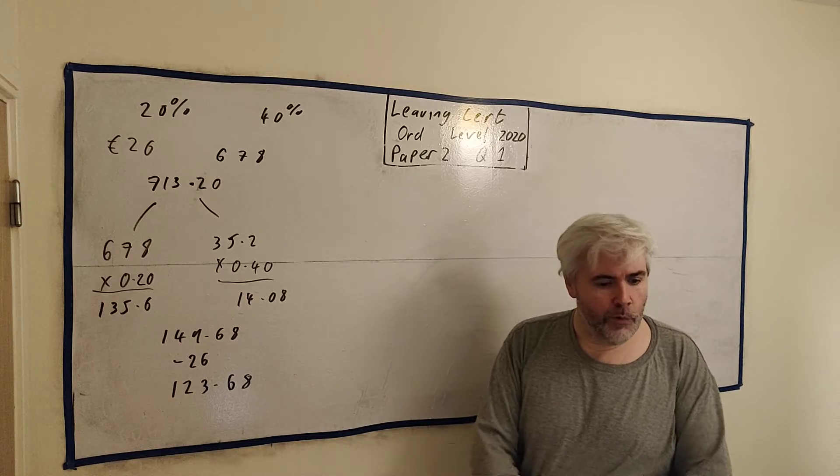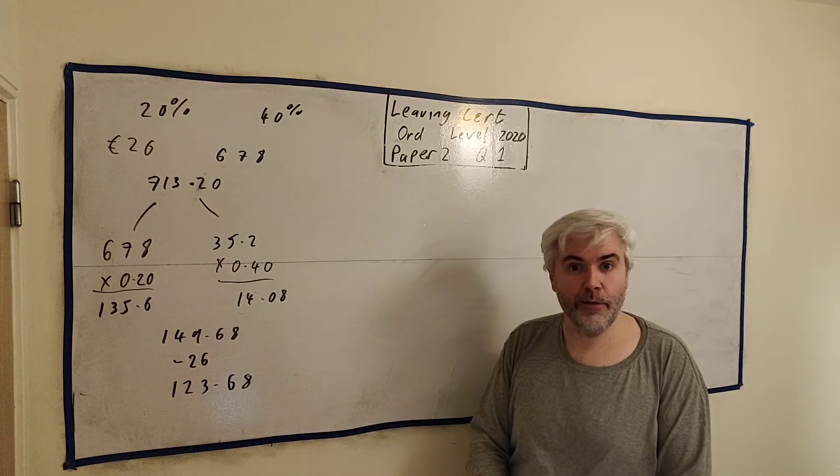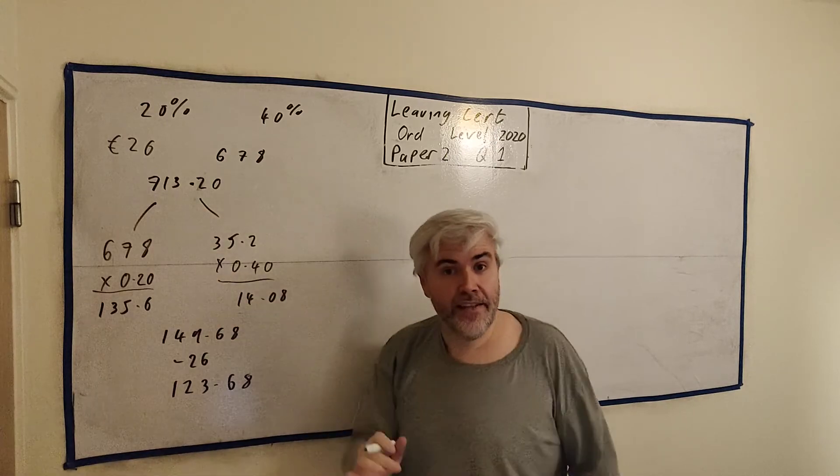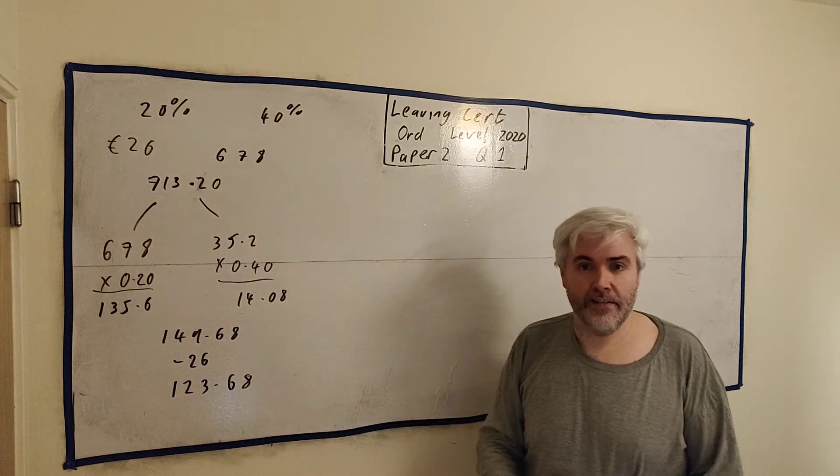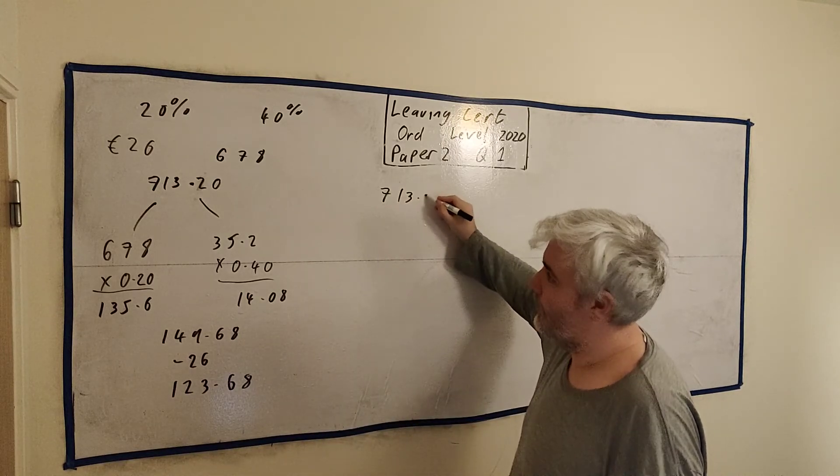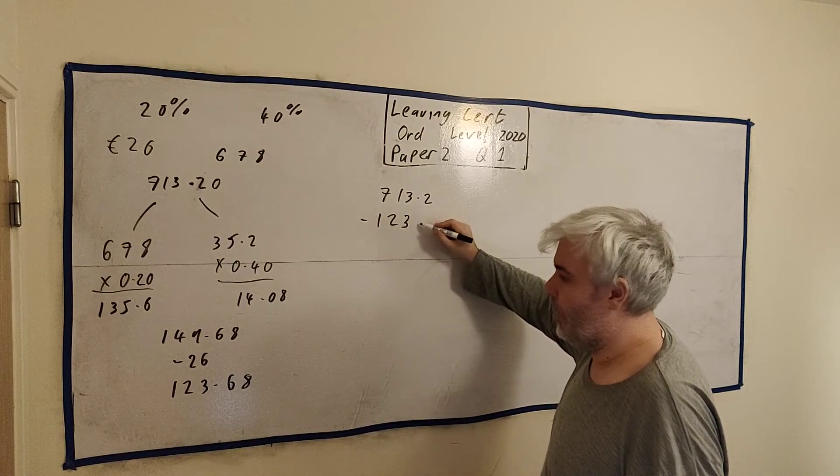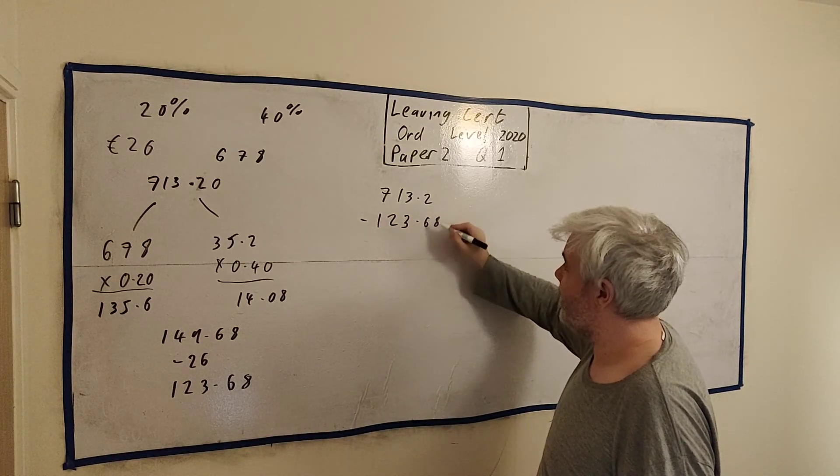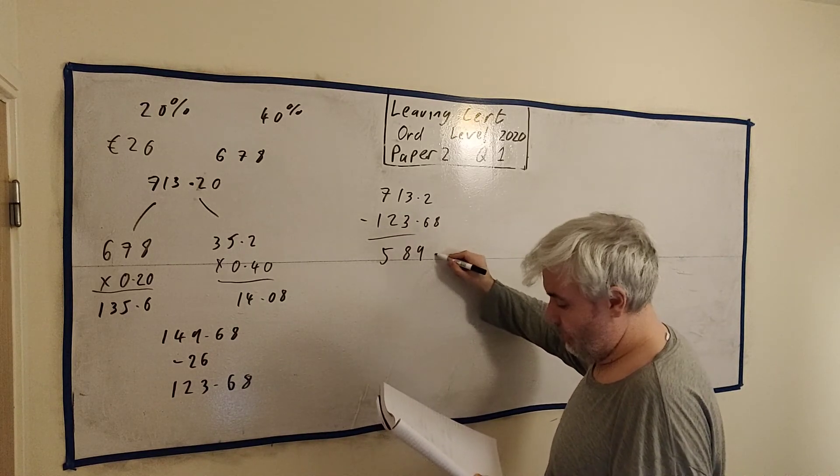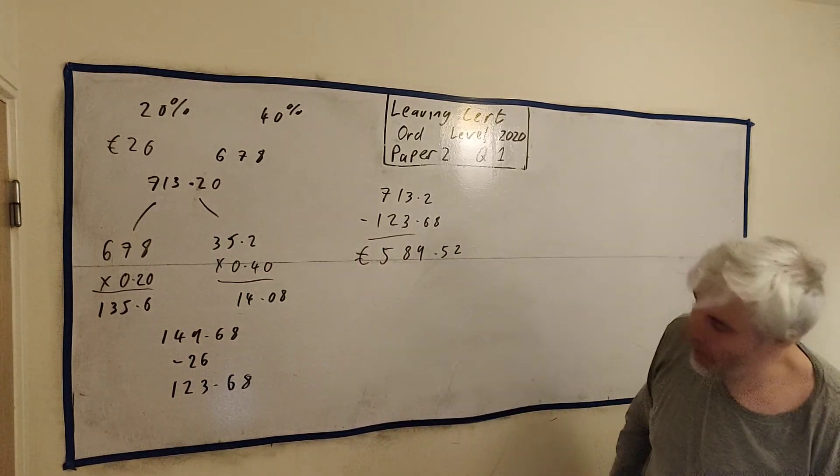They asked what was his net income - basically, how much money will he have at the end of the week. We know his gross income is €713.20. Net income is after you pay tax. That's the only reason we wanted to know the tax, so we could take it away from our full amount. So he thought he was earning this, but he actually only earned €123.68 less. And if we take that away, we get €589.52. That is his net income for that week.